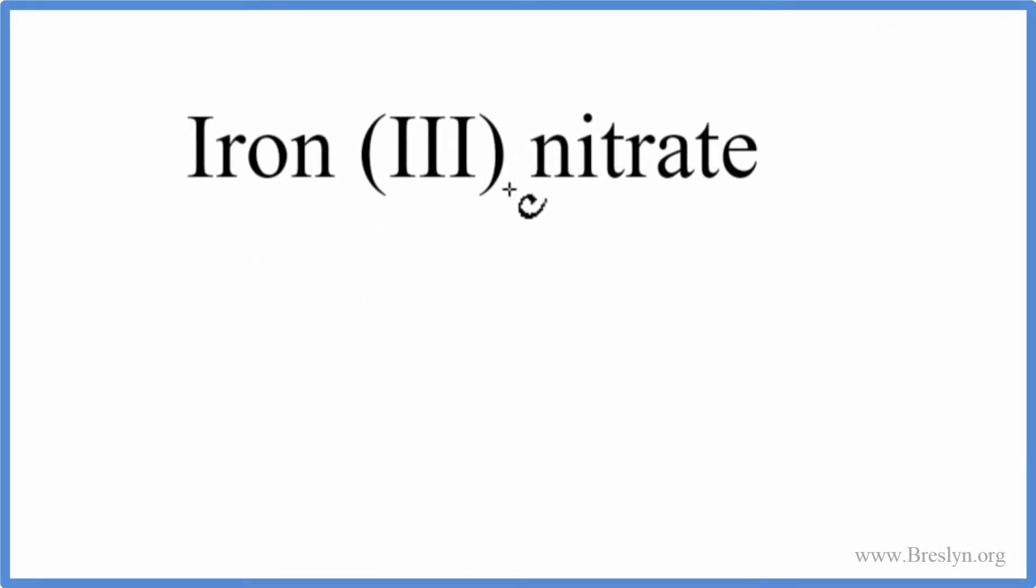To write the formula for iron three nitrate, we look up iron on the periodic table—that's Fe—and then we look up nitrate, but you won't find that on the periodic table.